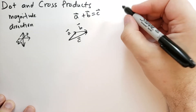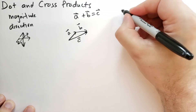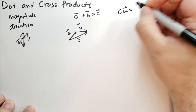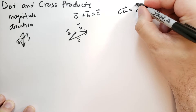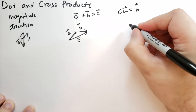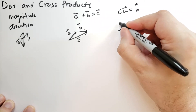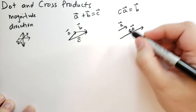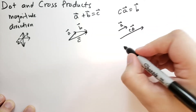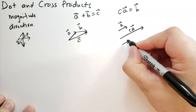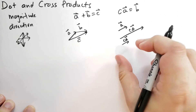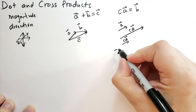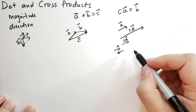We can also multiply vectors by a real number C — we call it a scalar — so CA is going to equal some new vector B. If C is greater than 1, then CA vector will stretch it out. If it's less than 1 but greater than 0, then CA vector will shrink it. And if it's negative 1, then it'll flip the vector to point backwards with the same magnitude.